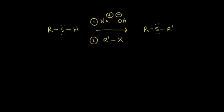Let's look at how to prepare sulfides from thiols. Over here on the left, I have my thiol. And to that thiol, I'm going to add sodium hydroxide. The sodium hydroxide is going to deprotonate the thiol, which is then going to react with this alkyl halide in the second step of the reaction to produce my sulfide as my product.